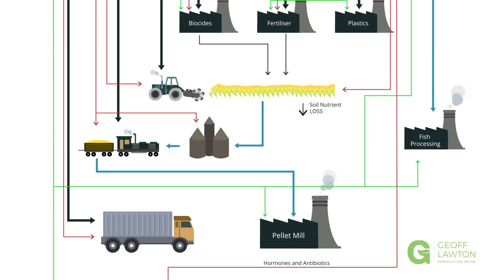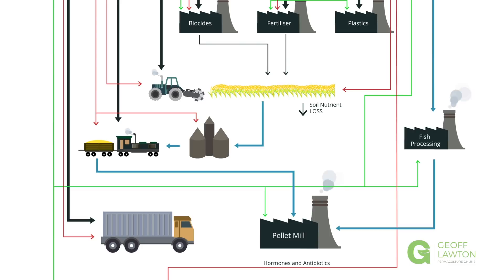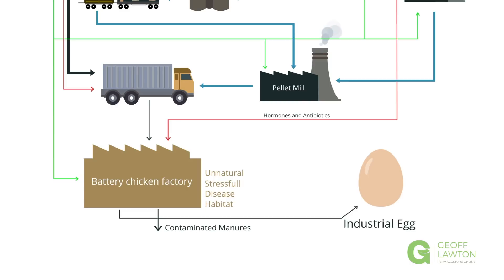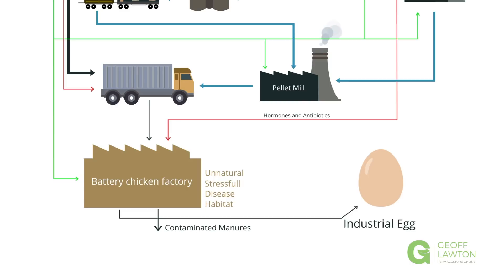And after the fish basic protein grain is processed is taken to a pellet mill, where the chicken feed, along with the grain and all its embodied energy, is trucked to the chicken factory. And the chicken eggs are then trucked to the supermarket. And there you have all the connections that are responsible for that industrial egg.